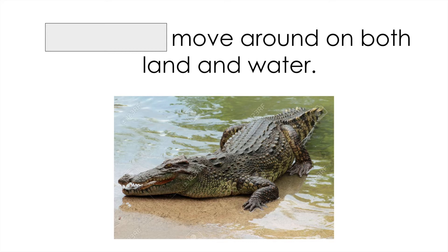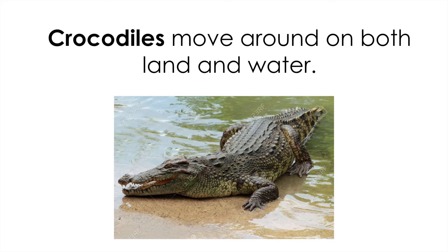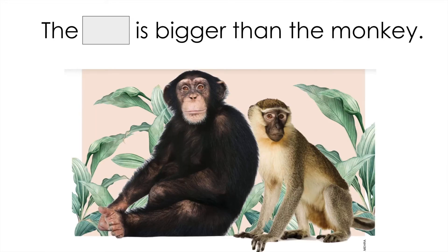What's this animal? It's the crocodile. Crocodiles move around on both land and water. How do you spell crocodile? We've learned this word before, right? C-R-O-C-O-D-I-L-E-S. Crocodiles. What's the missing word here? The ape is bigger than the monkey. Ape. A-P-E. That's an A magic-E word for the long A sound. Ape.